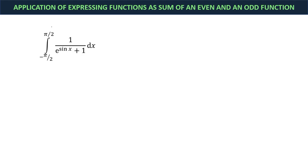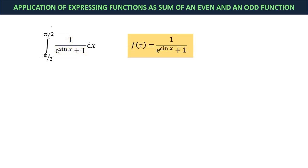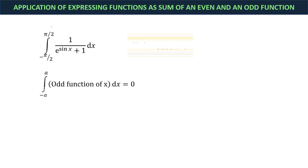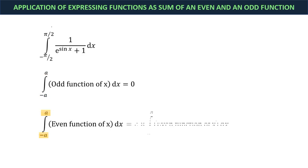This is useful when the lower and upper limits are additive inverses of each other. For example, suppose we want to find the integral of 1 over (e to the sine x plus 1). This function is neither even nor odd. Recall that the integral of an odd function with limits that are additive inverses is equal to 0, and the integral of an even function with limits that are additive inverses is equal to 2 times the integral of the function with lower limit 0 and upper limit a.